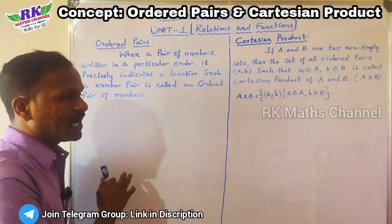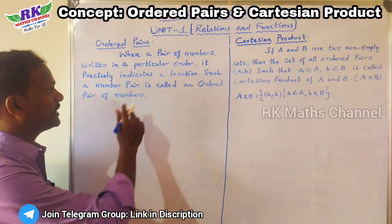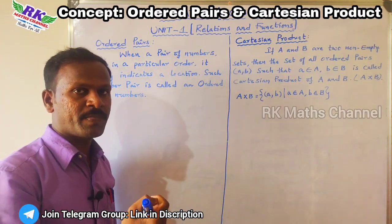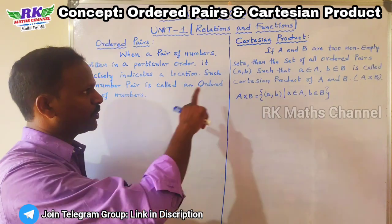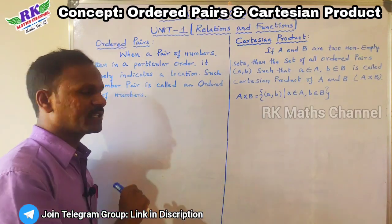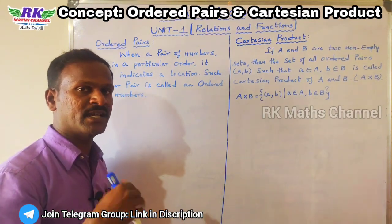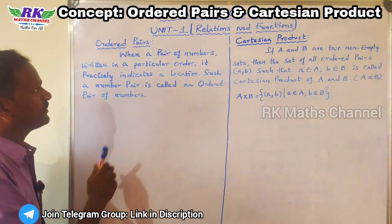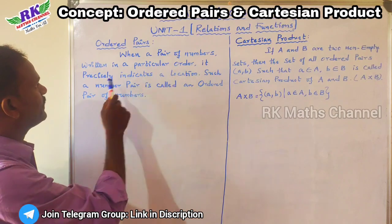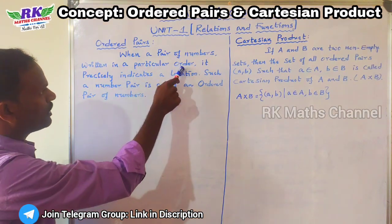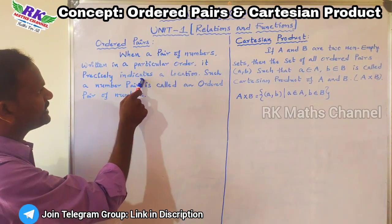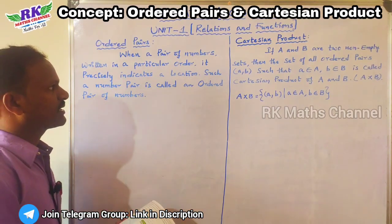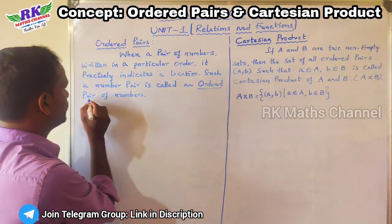Ordered pair — definition. When a pair of numbers is written in a particular order, it precisely indicates a location. That is called an ordered pair.